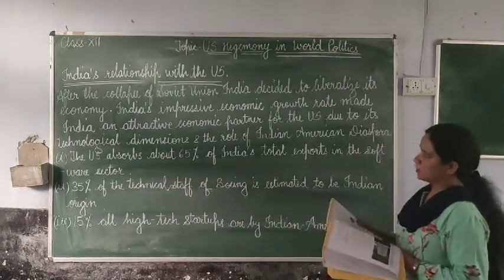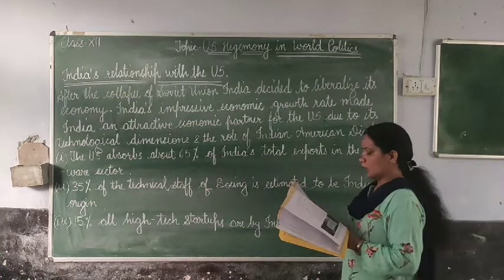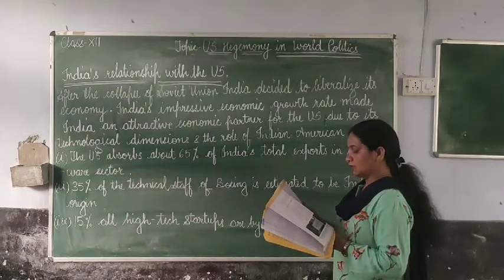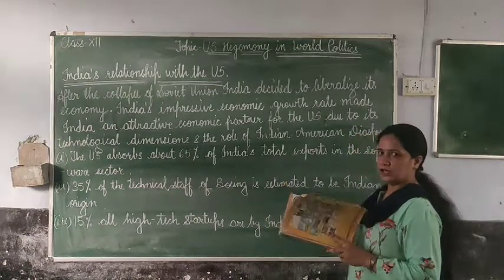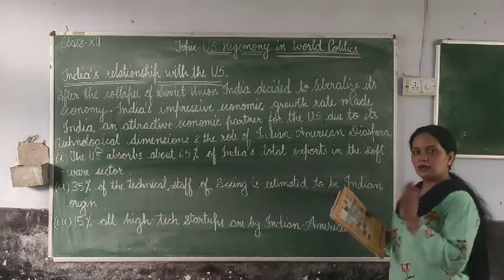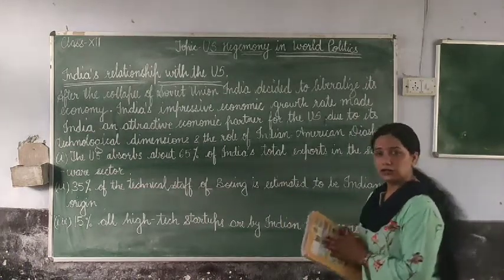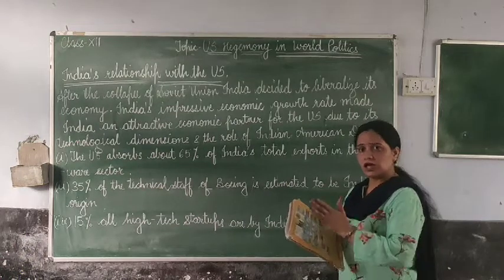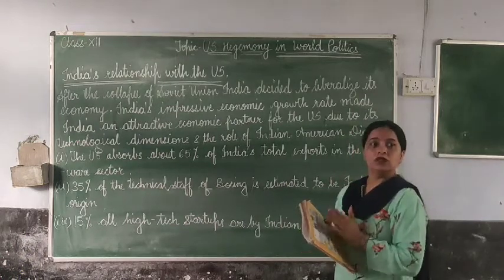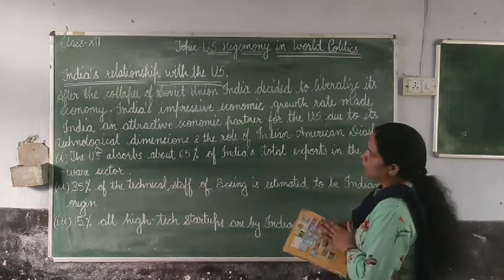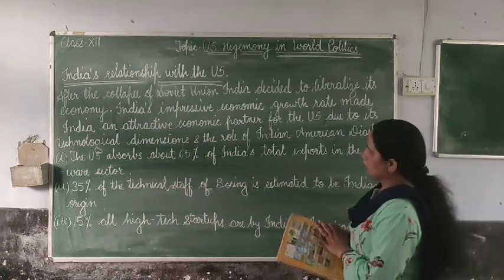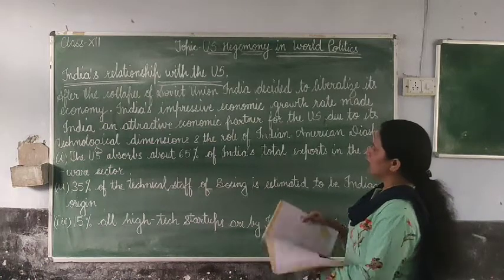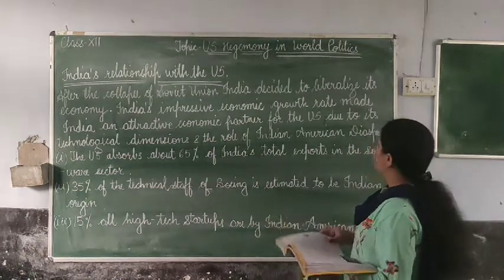Our next topic is India's relationship with the US. During the Cold War years, India found itself on the opposite side of the divide from the US. India's closest friendship during those years was with the Soviet Union — meaning Russia and the other 13 countries which afterwards got disintegrated. After the collapse of the Soviet Union, India decided to liberalize its economy.